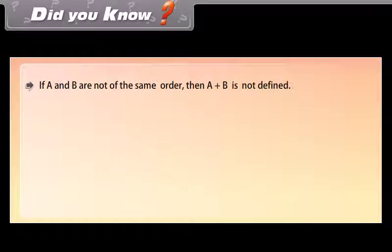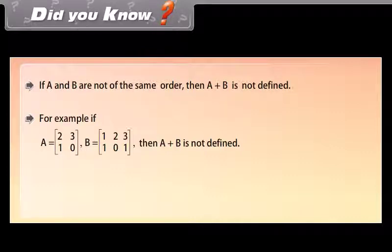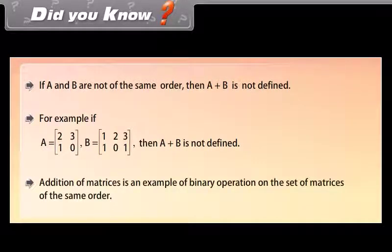Did you know: if A and B are not of the same order, then A plus B is not defined. For example, if A is a 2 by 2 matrix with rows [2, 3] and [1, 0], and B is a 2 by 3 matrix with rows [1, 2, 3] and [1, 0, 1], then A plus B is not defined. Addition of matrices is an example of a binary operation on the set of matrices of the same order.